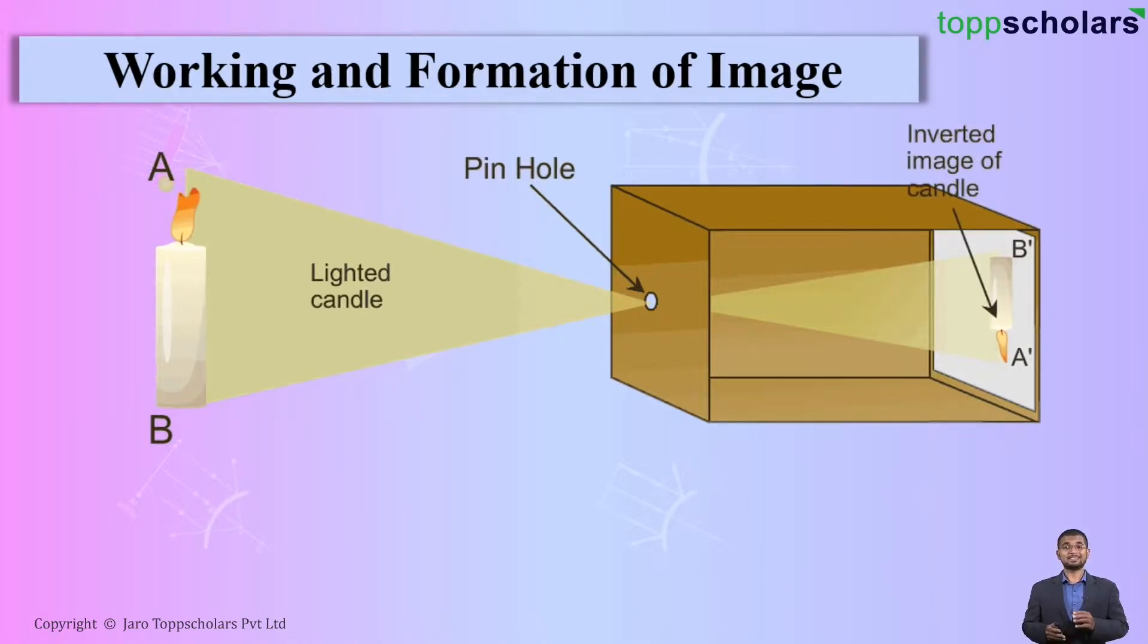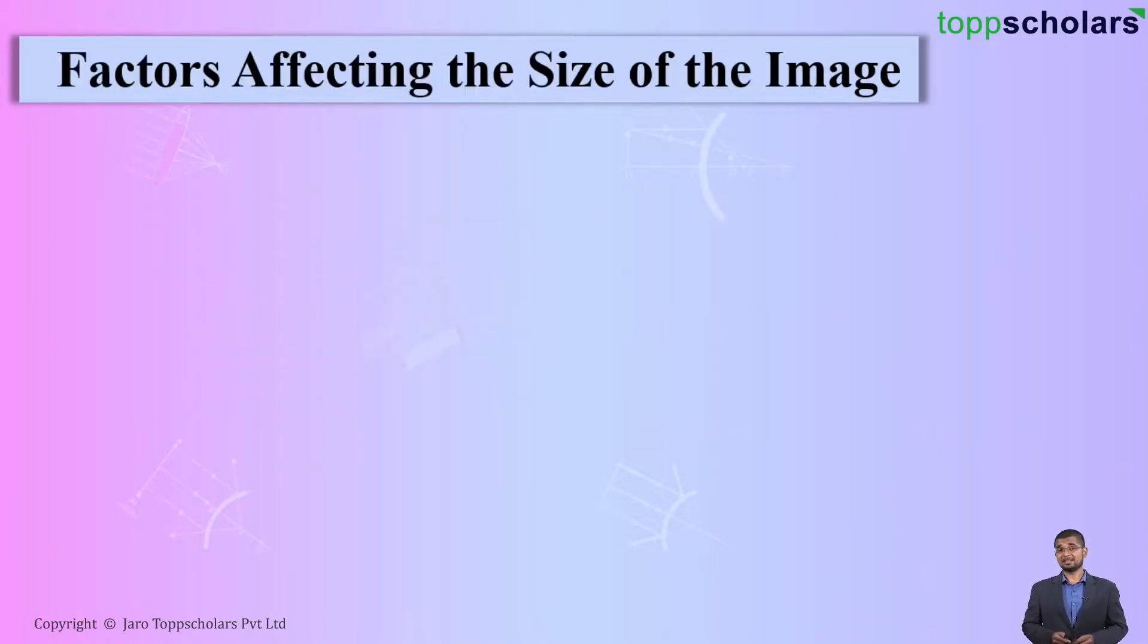Now, the image is A dash B dash. After understanding about the formation of image, let us understand the factors affecting the size of image.